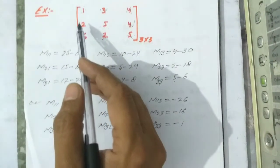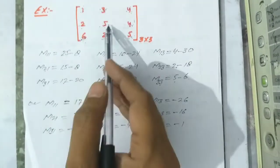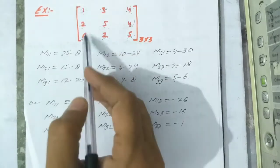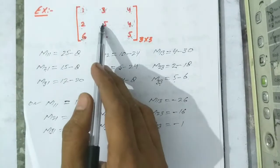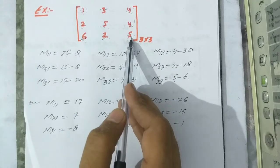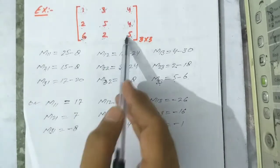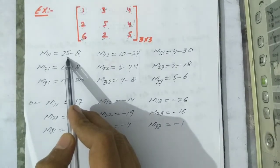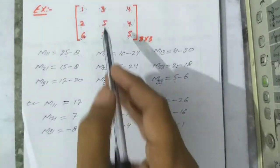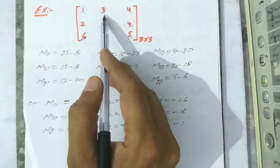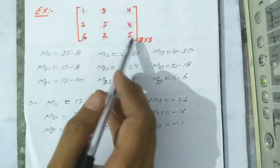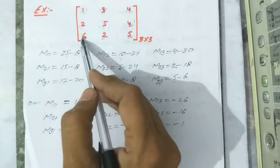Now let us take a specific square matrix of 3 by 3 order: [1 3 4 / 2 5 4 / 6 2 5]. To find m11, we vanish the first row and first column, leaving these four elements. We take the cross product: 5×5 = 25 minus 4×2 = 8, so m11 = 25 − 8 = 17. For m12, eliminating the first row and second column leaves four elements: 2×5 = 10 minus 6×4 = 24, so m12 = 10 − 24 = −14.